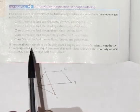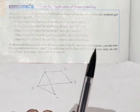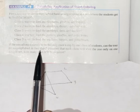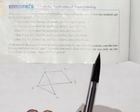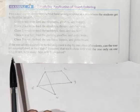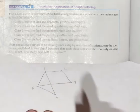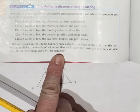So if the zoo allows animals to be fed only once a day by one class of students, can the tour be accomplished in two days? Okay. So what they're looking is, is this two colorable? Assume that each class will visit the zoo only on one day. And if not, how many days are required? Okay. So we can't just answer, is this two colorable? We actually, they're giving you the rest and they're saying, if not, how many days are required?